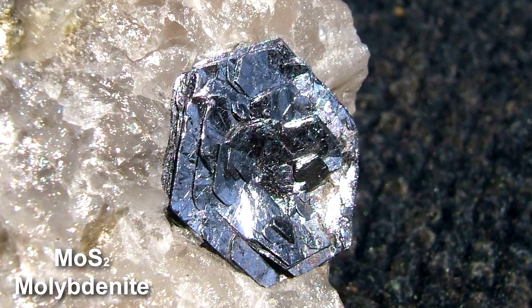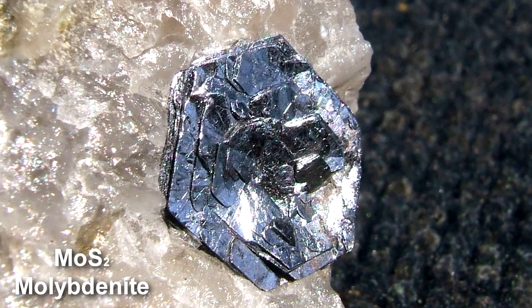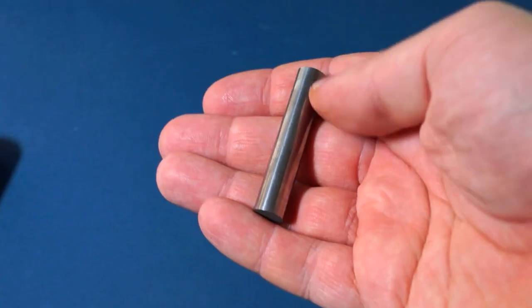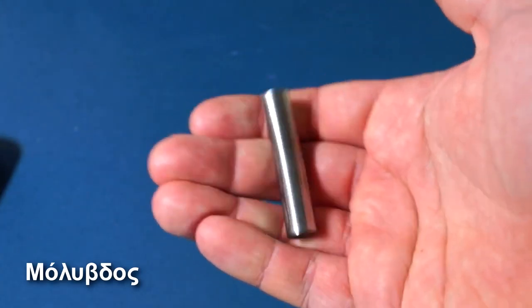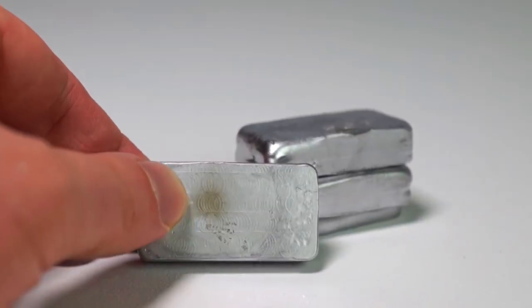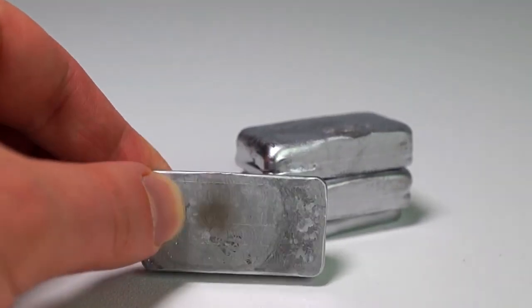Molybdenum does not occur naturally as free metal, but it can be obtained through chemical synthesis from minerals. This metal's name is derived from the Greek word molybdos, meaning lead, since its ores were frequently confused with lead ores.